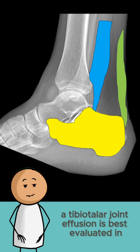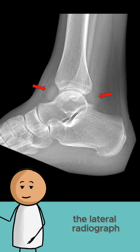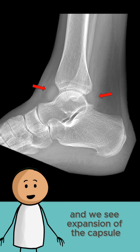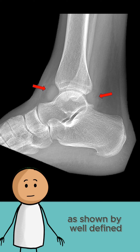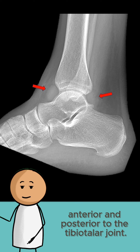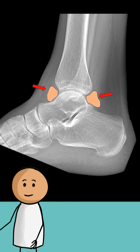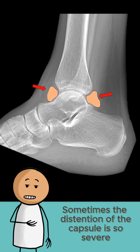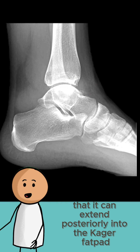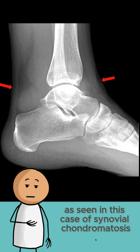A tibiotalar joint effusion is best evaluated on lateral radiographs, and we see expansion of the capsule as shown by well-defined, rounded densities anterior and posterior to the tibiotalar joint. Sometimes, the distension of the capsule is so severe that it can extend posteriorly into the Kager's fat pad, as seen in this case of synovial chondromatosis.